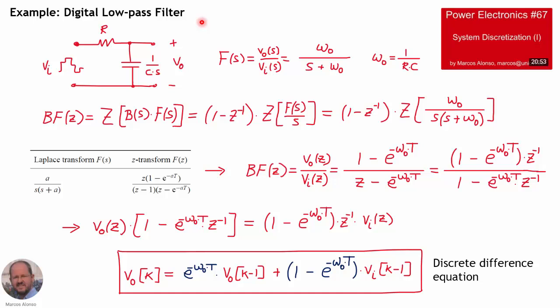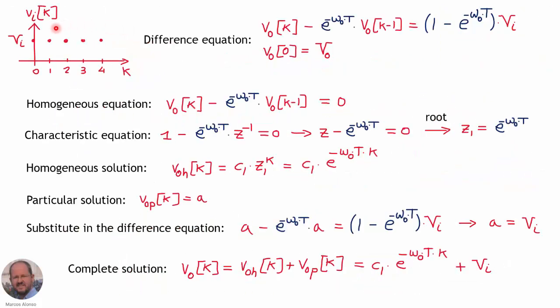Now we will see an example of solving a difference equation using the difference equation of a digital low-pass filter. In a previous video, Power Electronics number 67, we analyzed and discretized this low-pass filter to obtain the discrete difference equation that describes it. We are considering a discrete constant input voltage with value V sub i as the excitation.